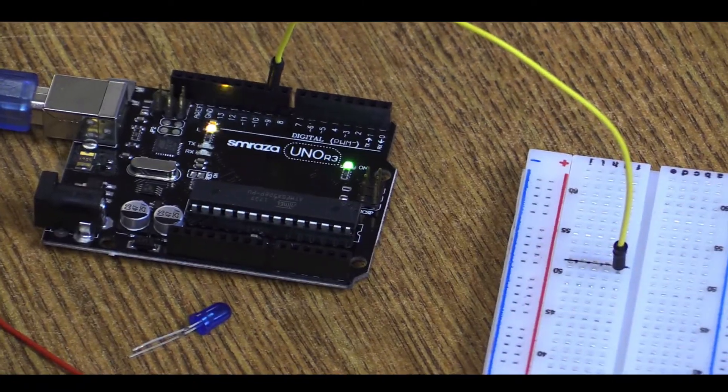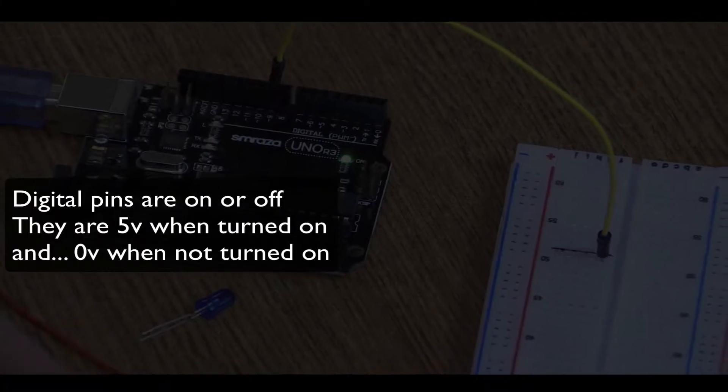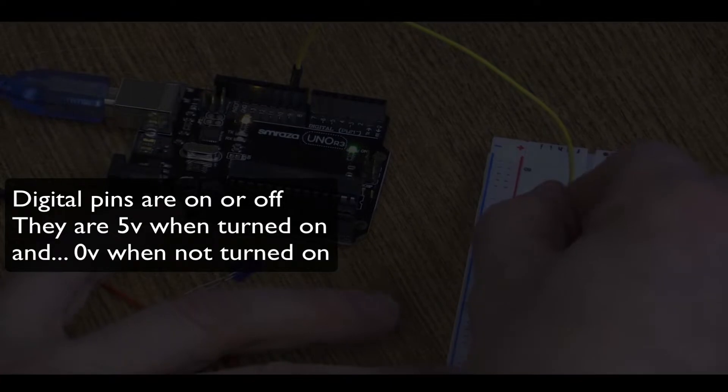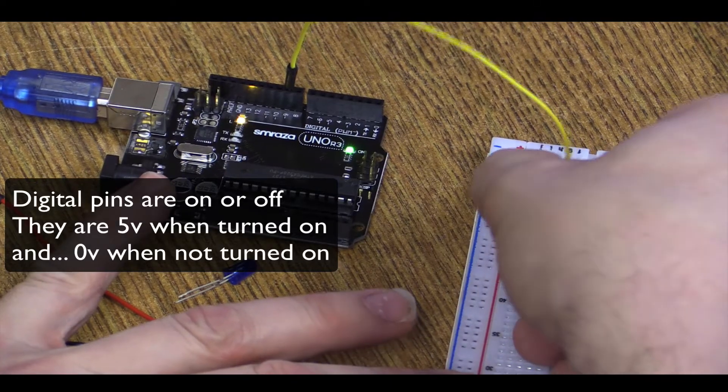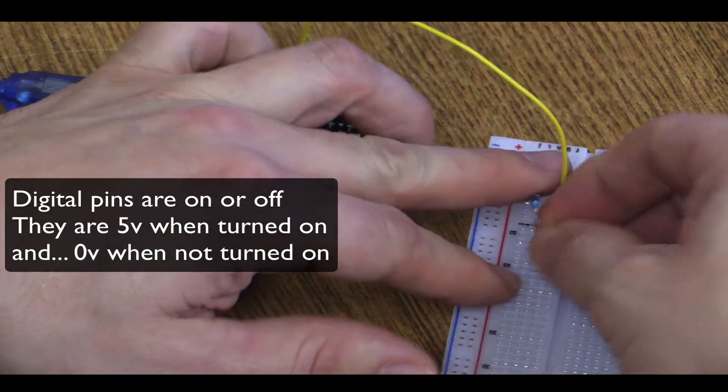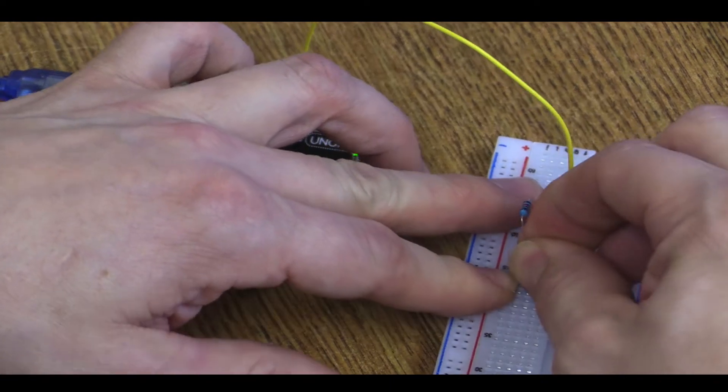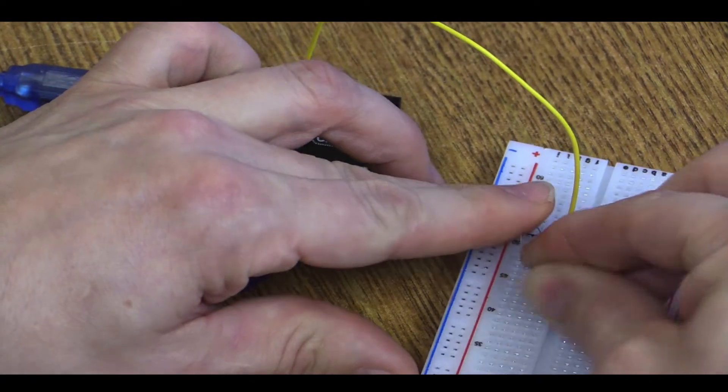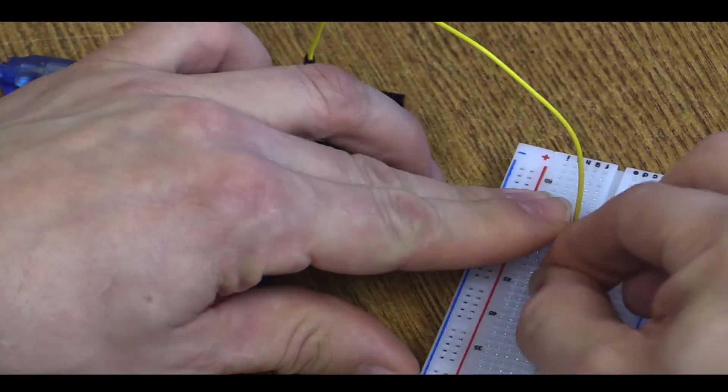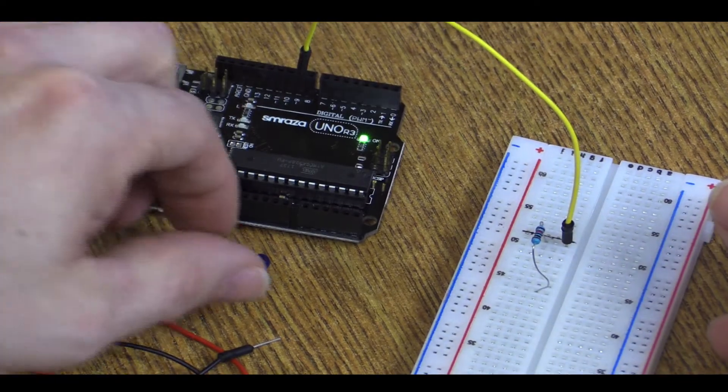When you use one of the digital pins, like 9, it can send 5 volts to the board, but only when you ask it to. We're going to take that 5 volts and run it through this resistor because it's going to be too much power for our light switch.